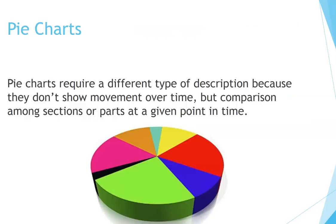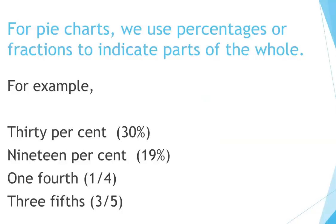Pie charts require a different type of description because they don't show movement over time, but comparison among sections or parts at a given point in time. For pie charts, we use percentages or fractions to indicate parts of the whole. For example: 30 percent, 19 percent, one-fourth, three-fifths.